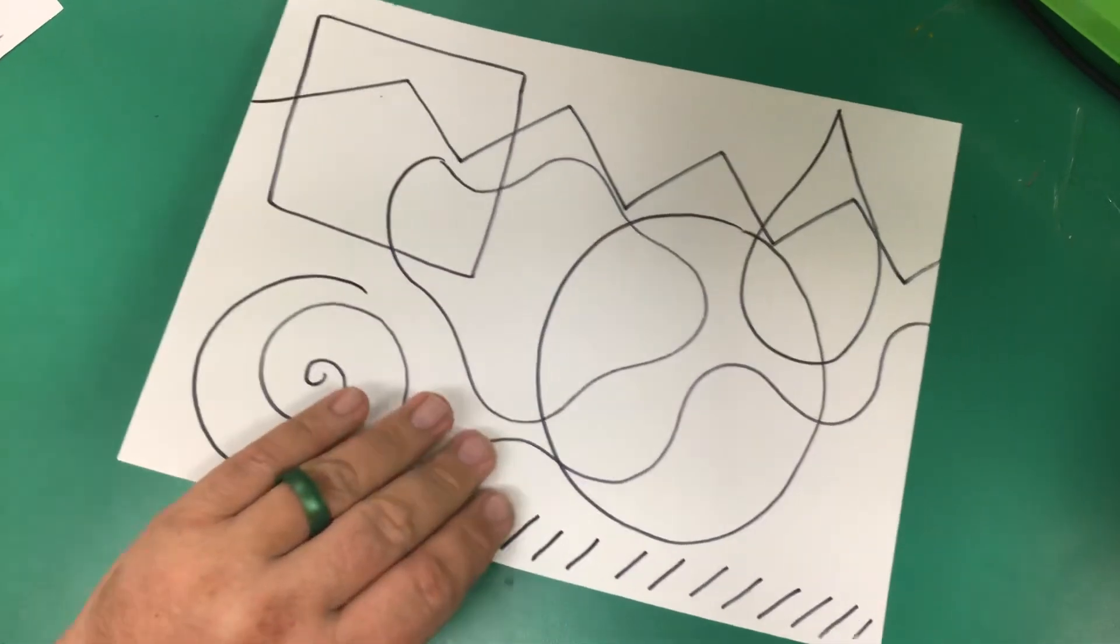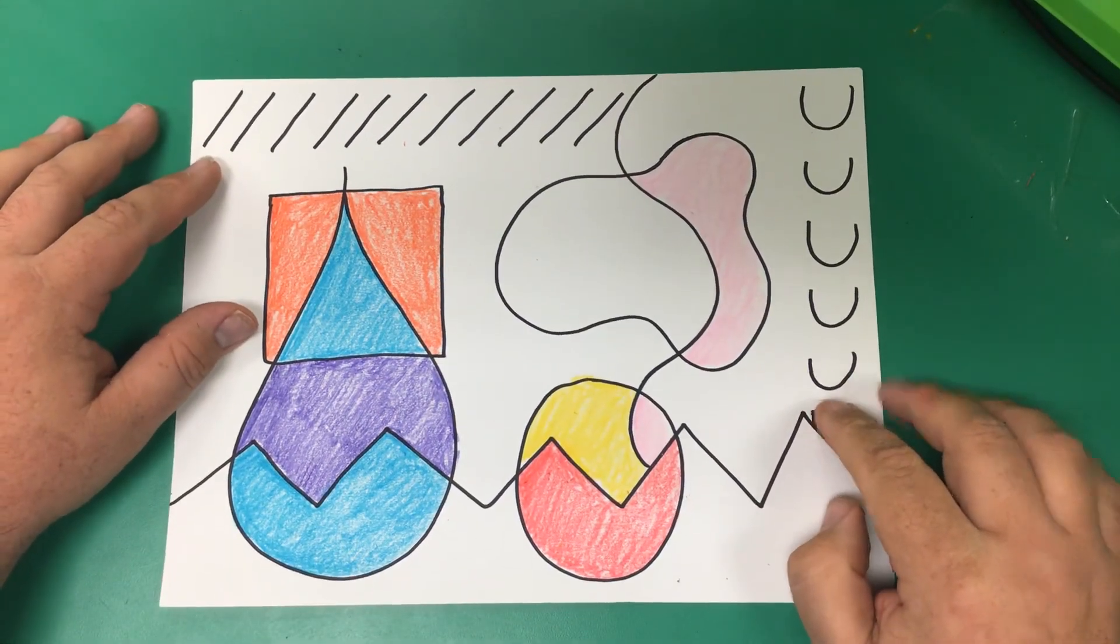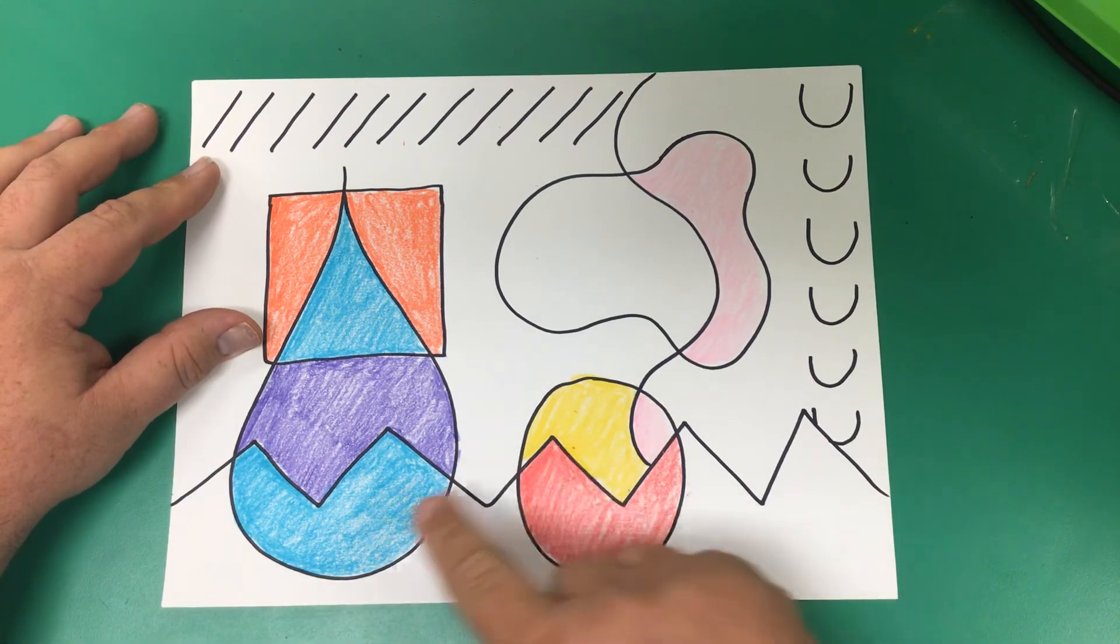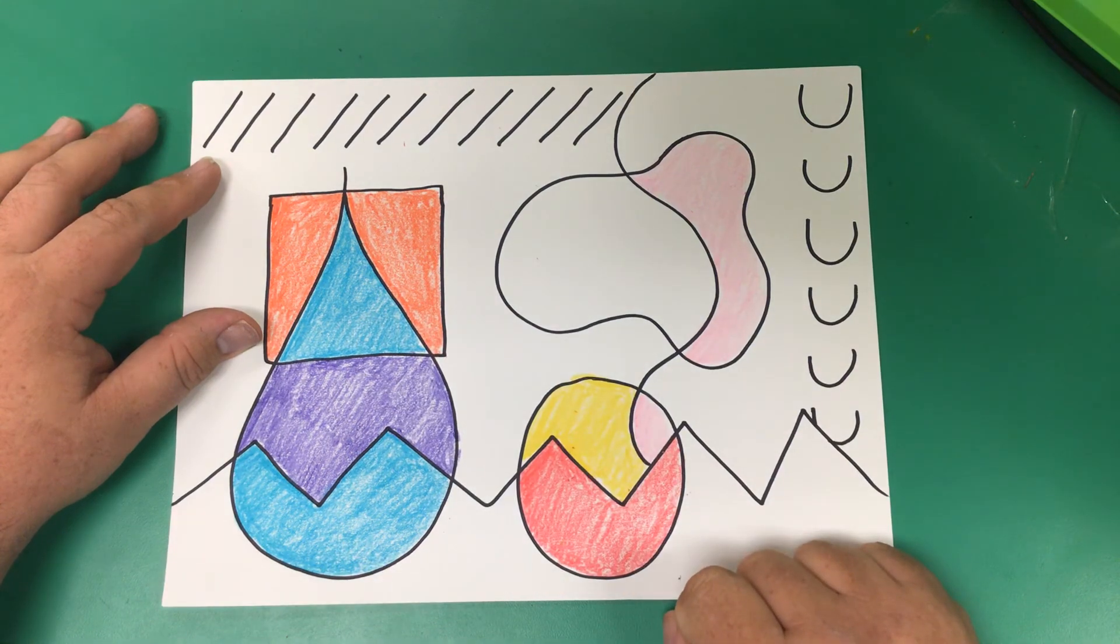I bet they're all going to be super different and super interesting. Here is my picture I've started coloring. I'm not done yet. But if you notice where the lines went through some of my shapes, I changed the colors. That cool? It looks pretty neat, I think.